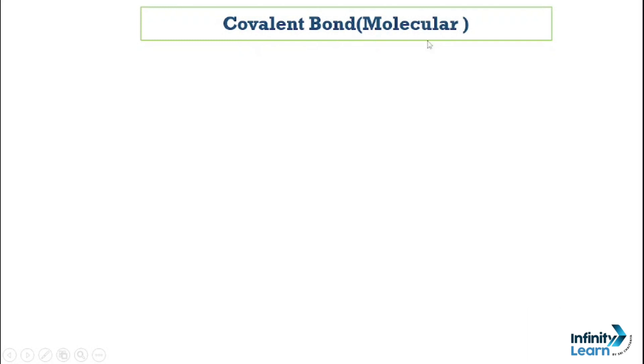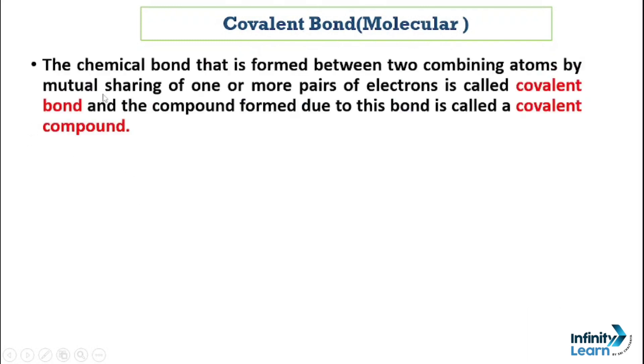So what is a covalent bond, which we call molecular bond? The chemical bond formed between two combining atoms by mutual sharing of one or more pairs of electrons is called covalent bond. Here mainly non-metals are involved. For example, hydrogen is a non-metal, and chlorine is also a non-metal. When they combine together, they give hydrogen chloride. Both are non-metals and they are mutually ready for the sharing of electrons. This sharing of one or more pairs of electrons is called covalent bond. And the compound formed due to this bond is called covalent compound.